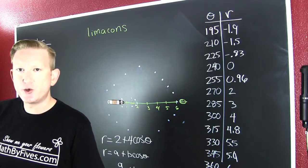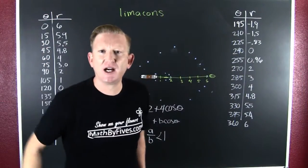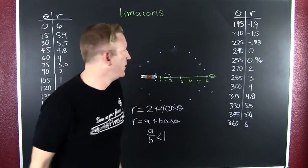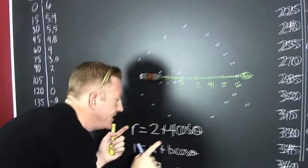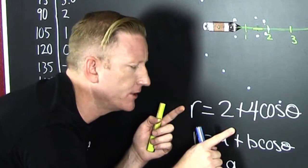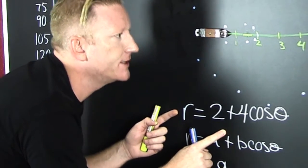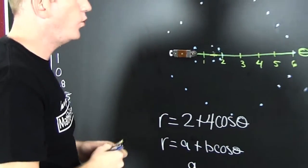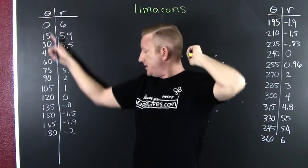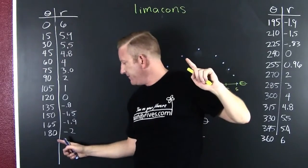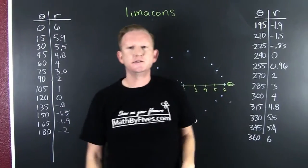Indeed, it is a treacherous path. We're on to the limaçon. Oh god. I'm graphing r plus four cosine theta. When I start here in degrees with our theta, our independent variable, we get out our r's.